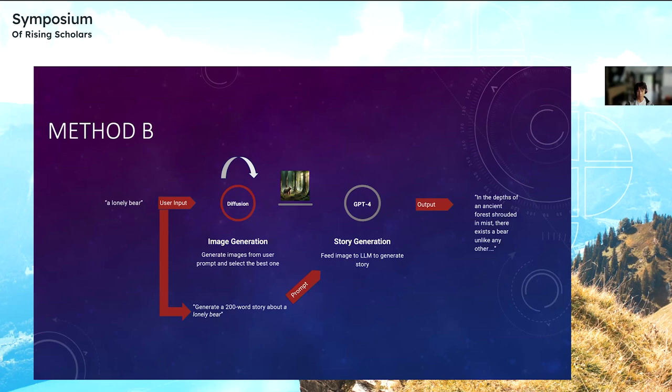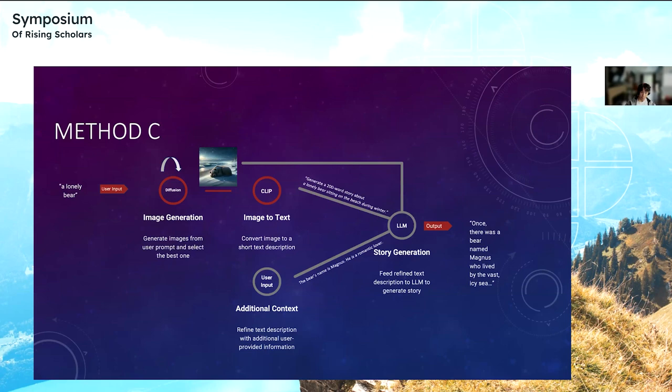Method C adds on two more things. First, you extract key details from the image using the CLIP model, and an example of this would be a lonely bear sitting on the beach during winter. In addition, you would also put additional context, like the bear's name is Magnus. So you combine the image, the text description, the key details, and the additional context from the user for an even better story.